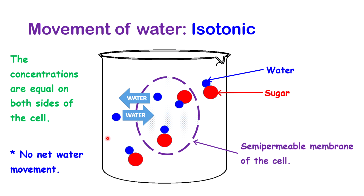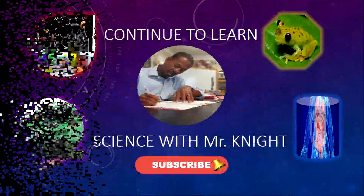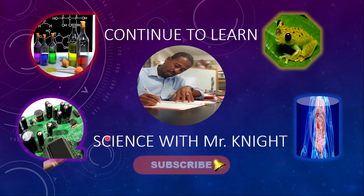So now you understand all three: hypertonic — water moves out of the cell; hypotonic — water moves into the cell; and isotonic — there is no overall movement of water. We're now at the end of this lesson. In the next lesson, we'll be looking at the effects of tonicity on cells. Keep watching and keep learning by simply subscribing. See you in the next lesson.